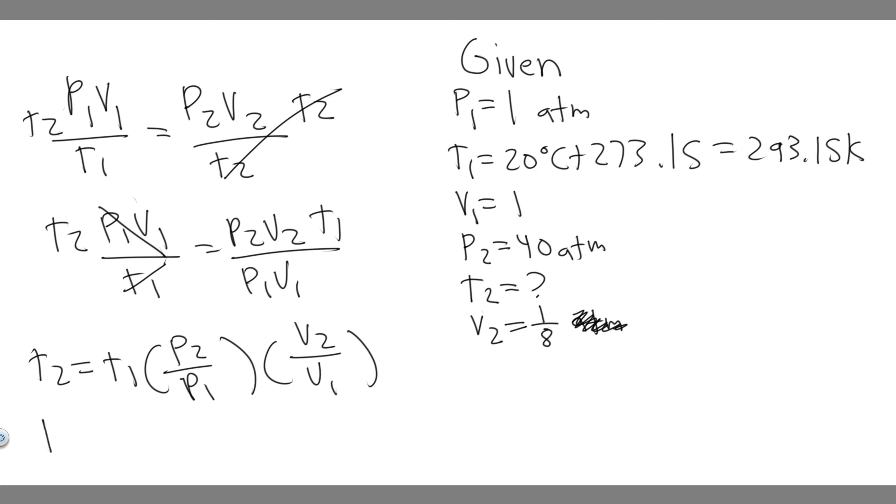And so now all we have to do is just plug in. So T2 equals T1, which we said was 293.15, times P2, which we know is going to be 40 - I'm not going to write the units because they're just going to cancel - divided by P1, which is 1 atm. And then V2 over V1, so V2 is one over eight, V1 is 1, so one over eight over 1 is just one over eight. So we have one over eight here. And so now what you're going to want to do is just go ahead and multiply it out. So 293.15 times 40 times one over eight. And when you do this, you're going to get that it equals, I'm just going to round here, so it's going to be equal to about 1,465 Kelvin.